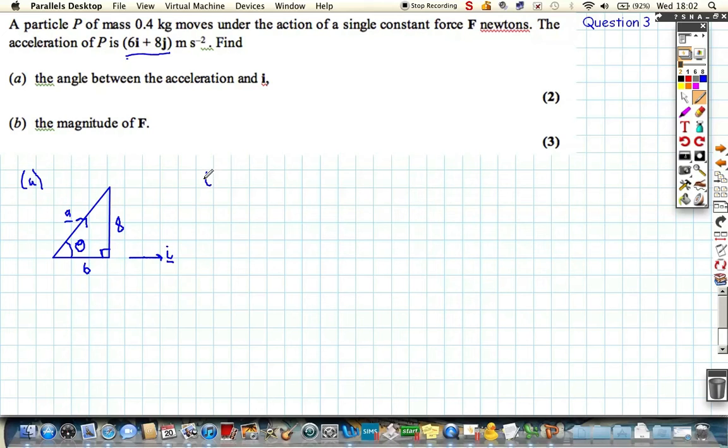we know we can tell from our basic trigonometry that the tan of theta is equal to the opposite divided by the adjacent toa. And then all we've got to do is to find theta. It's just the inverse tan, making sure our calculators in degrees of 8 over 6, which comes out as 53.13010235 degrees.